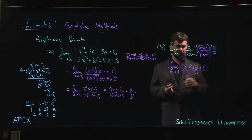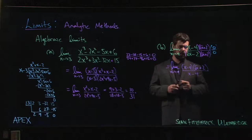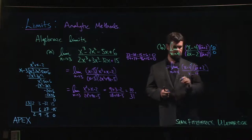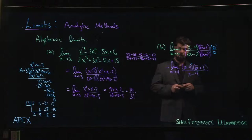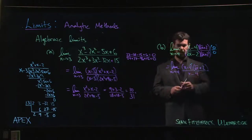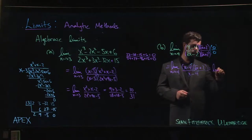But now x - 4 is common to both top and bottom, so you can cancel it. And now we just have the limit as x goes to 4 of √x + 2.